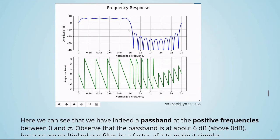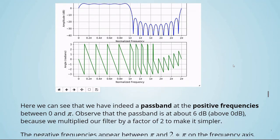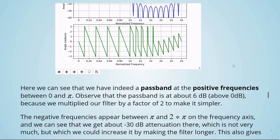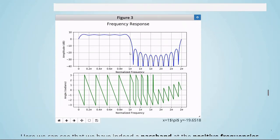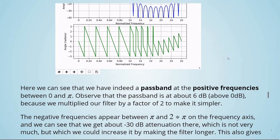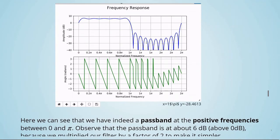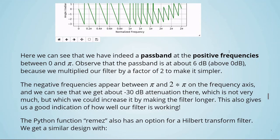And this is the frequency response of the complex filter. Here we can see that we have indeed a passband at the positive frequencies between 0 and π. Observe that the passband is at about 6 dB above 0 dB because we multiplied our filter by a factor of 2 to make it simpler. The negative frequencies appear between π and 2π. We can see that we get about minus 30 dB attenuation there, which is not very much, but we could increase it by making the filter longer. This also gives us a good indication of how well our filter is working.